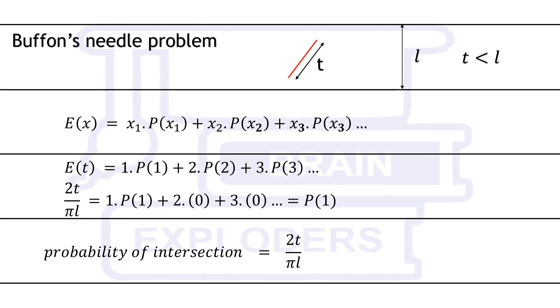We get probability of intersections equal to 2t over pi L. If you want to know the probability of intersection of a long needle then you can watch our another video on Buffon's needle problem.